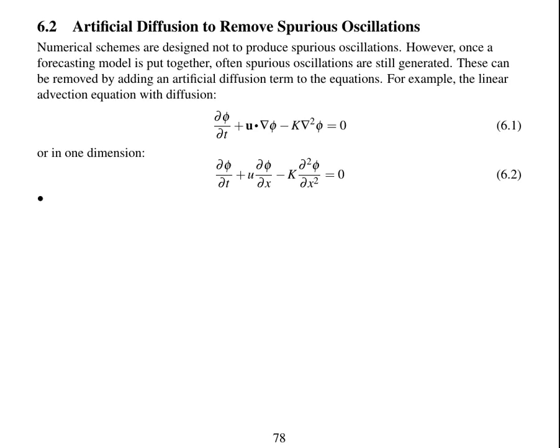So in one dimension, it's just in the x direction. Though adding diffusion dampens out spurious oscillations, we know that diffusion removes oscillations, particularly small-scale oscillations. The problem with adding artificial diffusion is it also removes real features. So it's only used as a last resort, however it is frequently used as a last resort in atmospheric models.